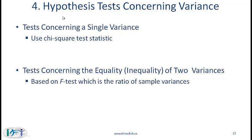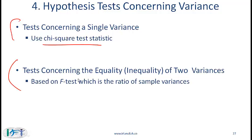Now we will talk about hypothesis tests concerning variance. There are two kinds of tests: tests concerning a single variance, where we use the chi-square test statistic, and tests concerning the equality or inequality of two variances, which are based on the F-test — a ratio of sample variances.